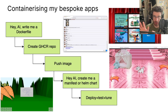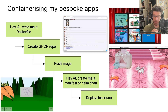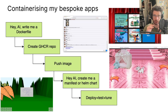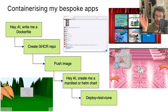Then I got the AI to create me a manifest or a Helm chart as appropriate. It's just a simple Kubernetes native YAML thing — just tells Kubernetes what to do. The apps are shown in the background: four of them.